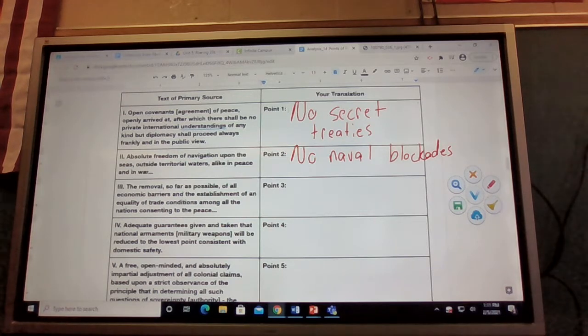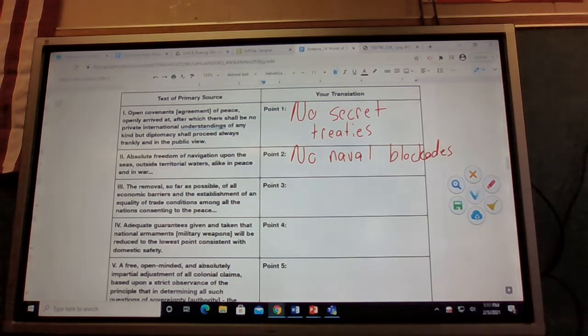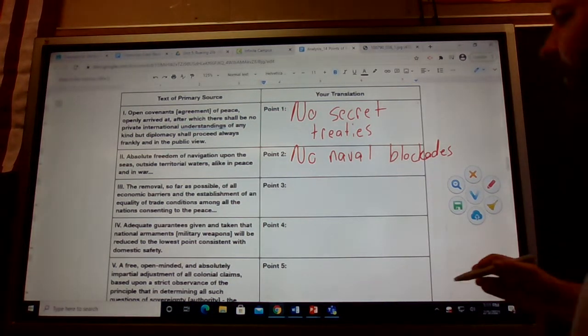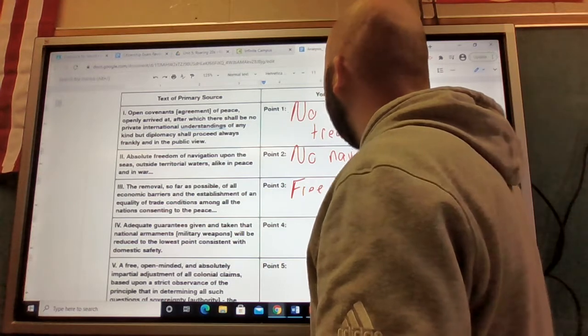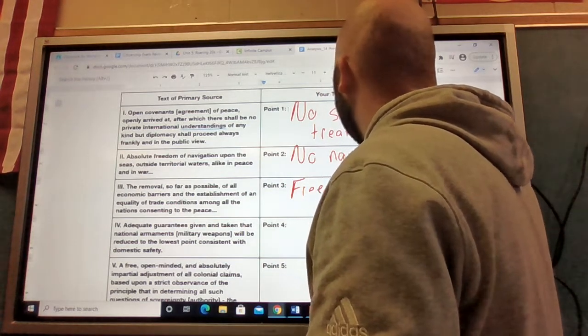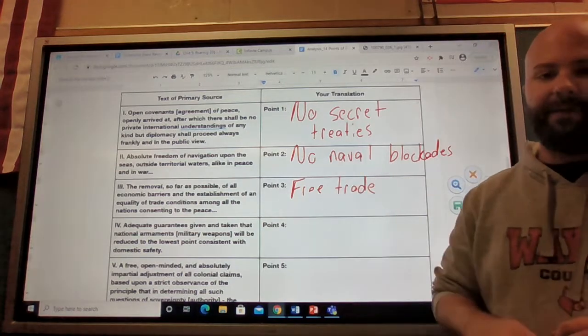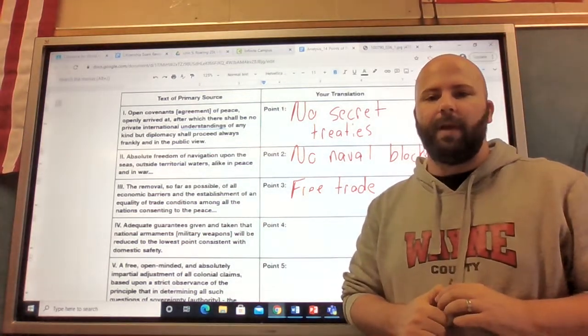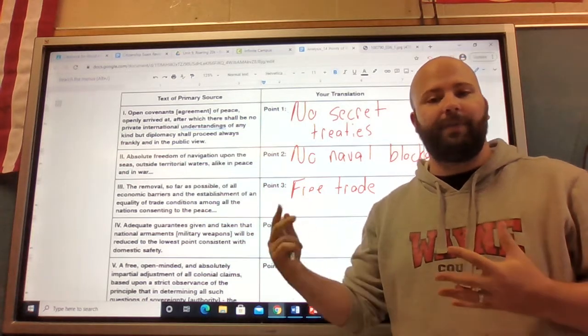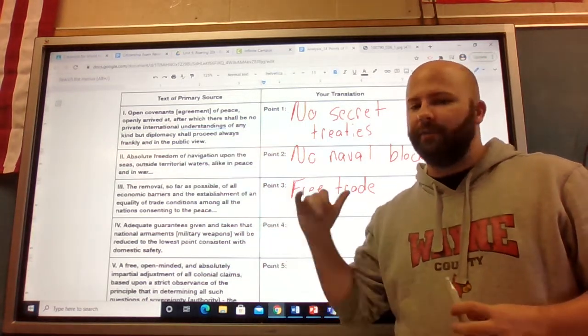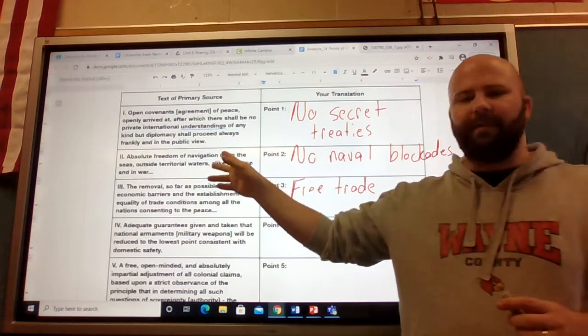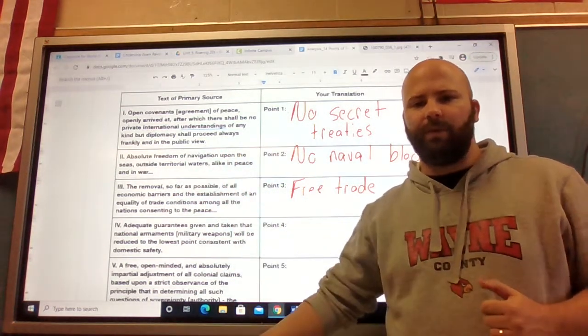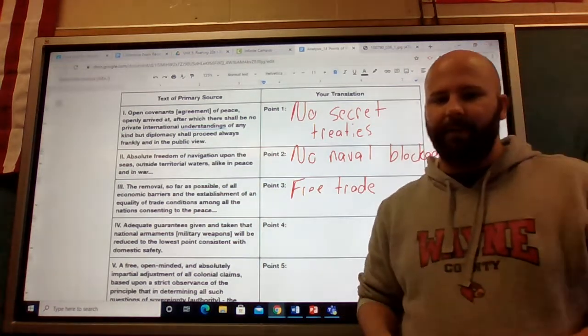Number three says the removal so far as possible of all economic barriers and the establishment of equality of trade conditions among all the nations consenting to the peace. Basically what he's talking about here is free trade between all the nations who are going to sign this treaty. One country can't restrict the ability of another country to trade with somebody else.